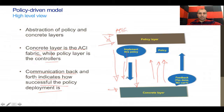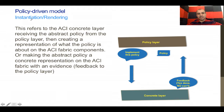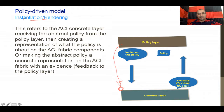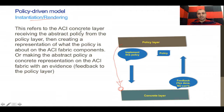It doesn't make sense that the controller pushes the policy down and hears nothing, assuming everything is working. The communication has to be full duplex. Instantiation or rendering refers to the process of sending the policy down — when the concrete layer takes it and translates it into actual configuration on the devices. This is taking the policy end state and translating it into the configurations that sit on the switches themselves.